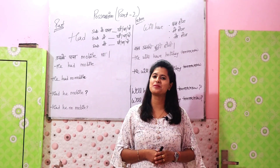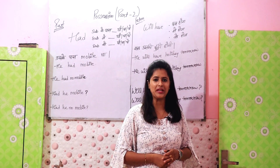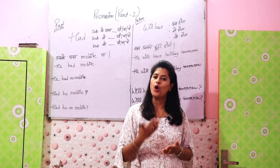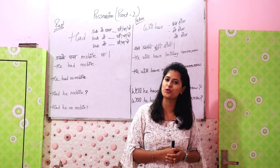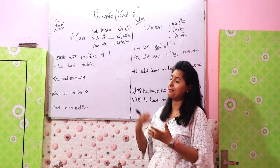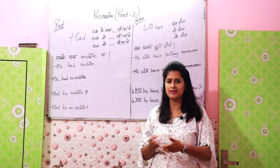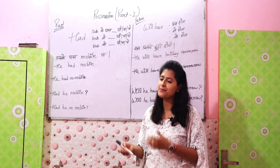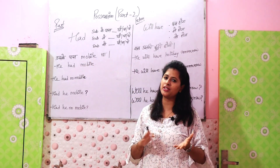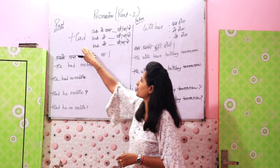Hello everyone, welcome to the Possession Part 2. In our first video we learned how to use possession in the present. Now we will learn how to use possession in the past. Whenever we say subject ke paas koi cheez thi, or subject mein koi cheez thi, or subject ko koi cheez thi, we will be using 'had' — whether the subject is singular or plural.